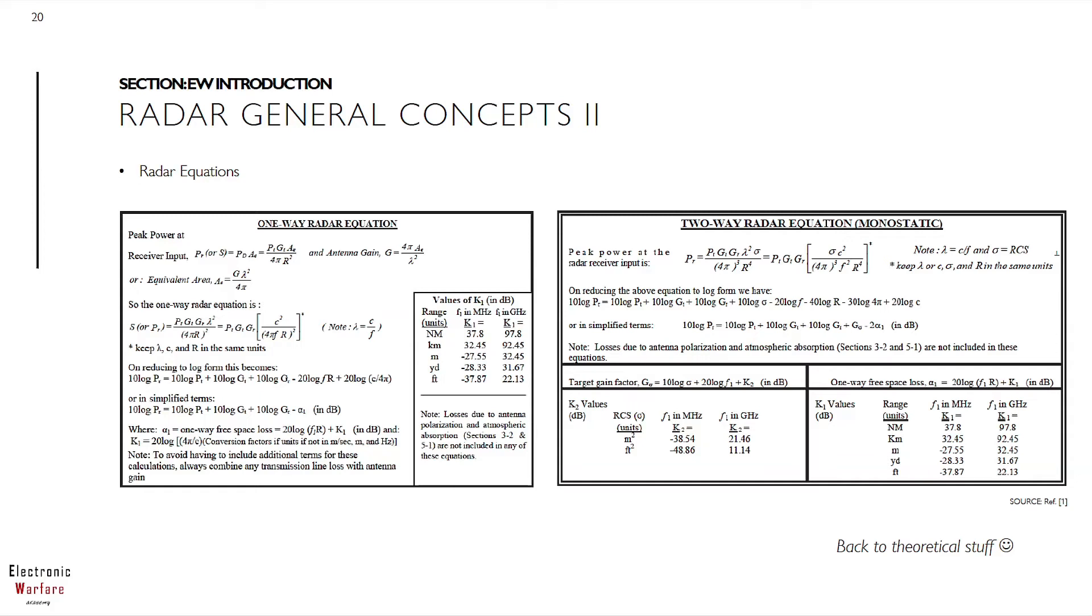Monostatic means the transmitting radar is in the same location as the receiving machine. In contrast, if transmitting and receiving radars are located in different positions, that is considered bistatic radar. As shown, the equations consider both paths: radar to target and target to radar.